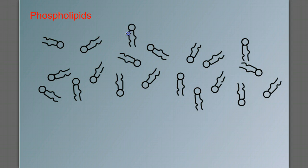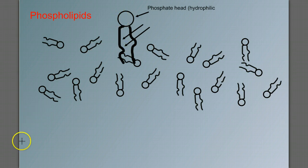You might recall from our video on biomolecules that phospholipids are interesting molecules because they consist of a phosphate head, which is hydrophilic, and two fatty acid tails, which are hydrophobic. So we have one end in this molecule that likes water, and one end that doesn't.